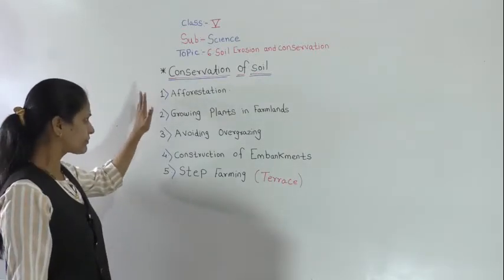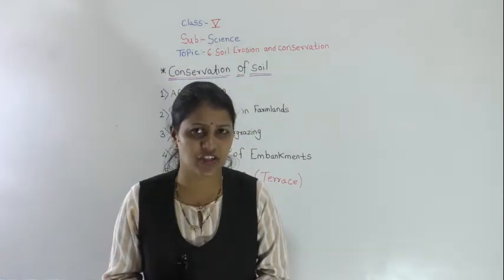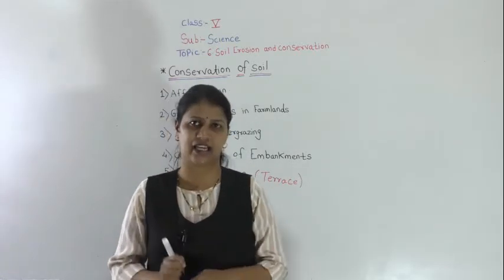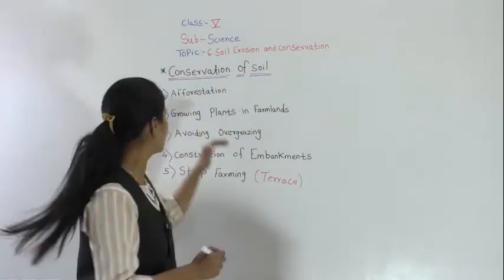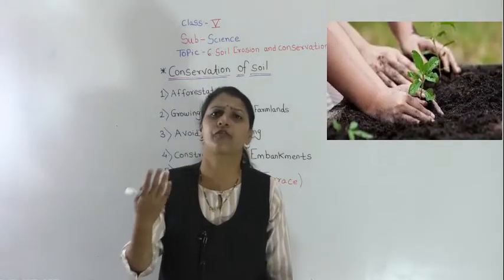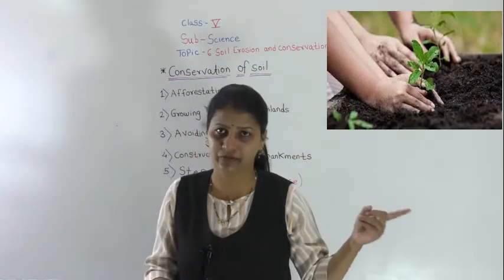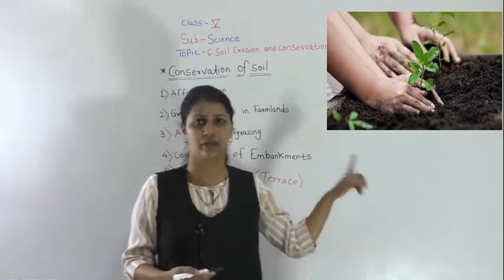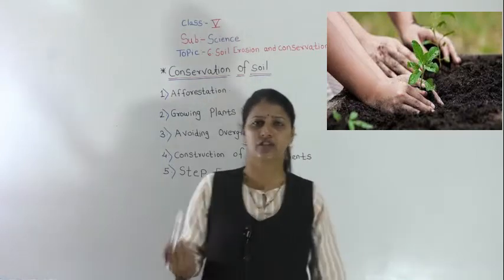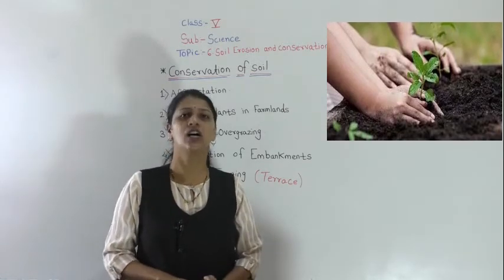The first method is afforestation. Deforestation is the cutting down of trees on a large scale, so afforestation is the opposite — it means growing a large number of trees on a large scale. This will help to prevent soil erosion.